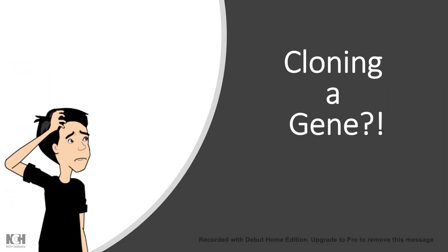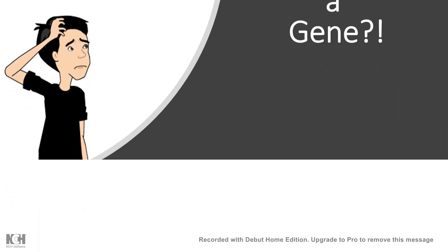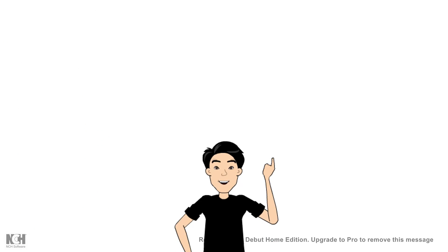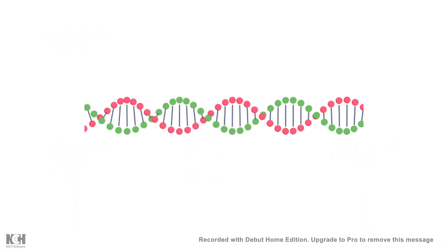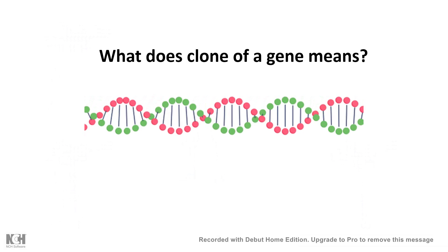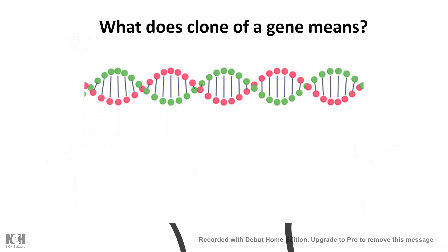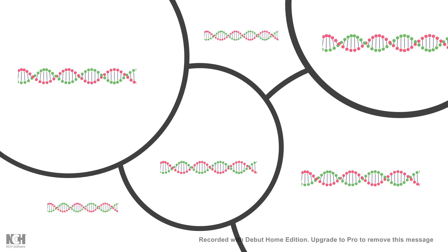What comes to mind when we say the word cloning? If you're a Star Wars fan, you might know that clone troopers are one of the biggest armies in Star Wars — armies that look alike. Something which looks alike is called a clone. So in terms of DNA, what does cloning mean? DNA cloning means similar-looking DNA, or DNA that is similar in terms of characteristics and properties.